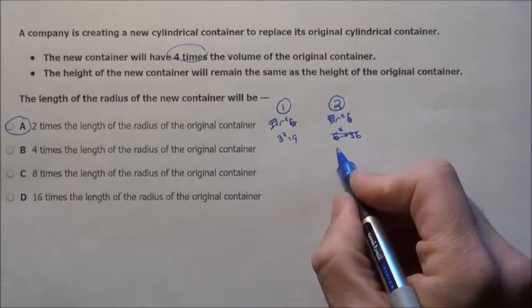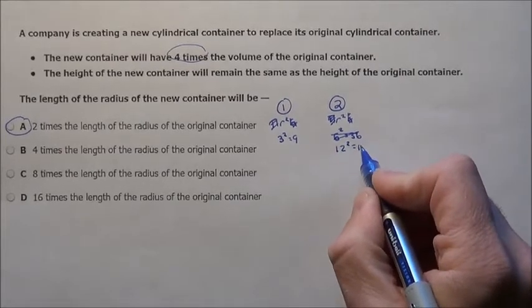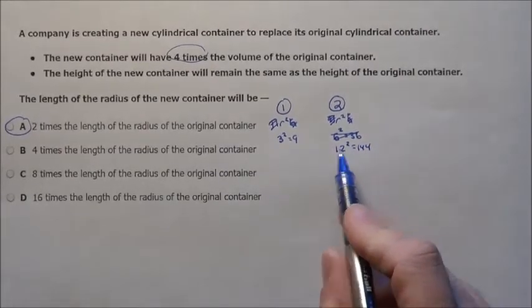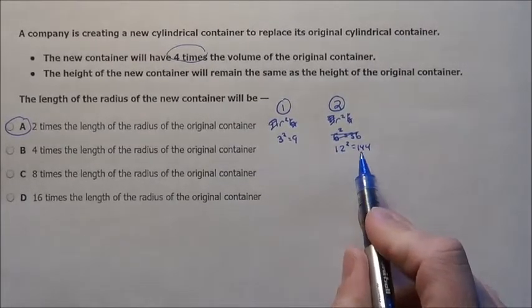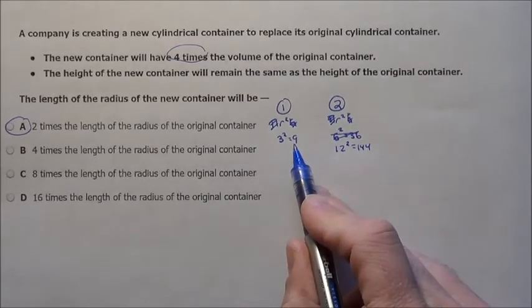3 times 4 would make it 12 squared, which would be 144. You can see 9 compared to 144, this is 16 times as much as that guy.